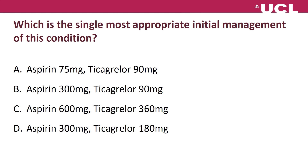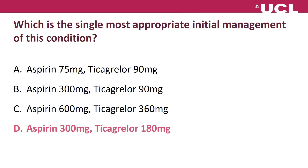Which is the single most appropriate initial management? Note that the choices include aspirin 75mg, aspirin 300mg, ticagrelor 90mg, ticagrelor 180mg, and various combinations. You can look in the BNF for guidance. Pause until you have your answer. The answer is D: aspirin 300mg or ticagrelor 180mg.